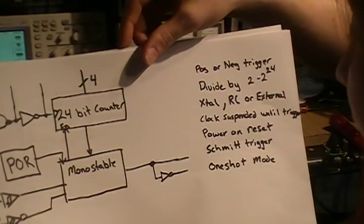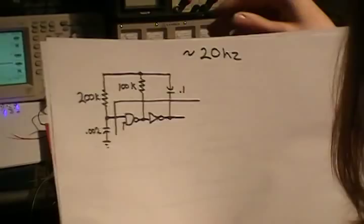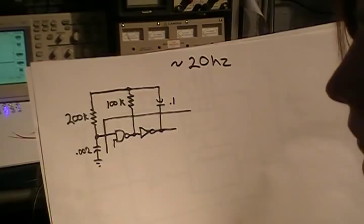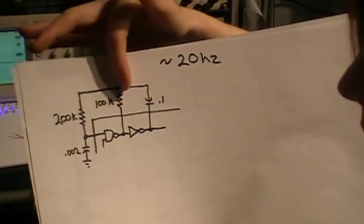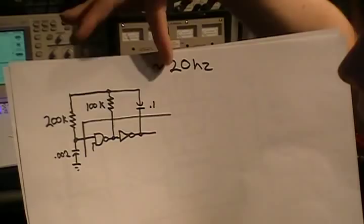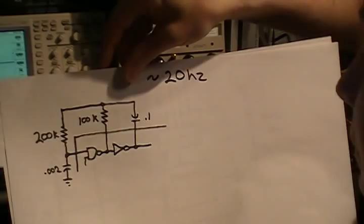Okay, so here's the configuration that I've set up. So here's my RC constant, a 200k resistor, a 2nF cap to ground, 100k resistor here, and a 0.1. So that sets up about a 20 Hz RC time constant. It depends on your supply voltage. I'm using about 5 volts here.